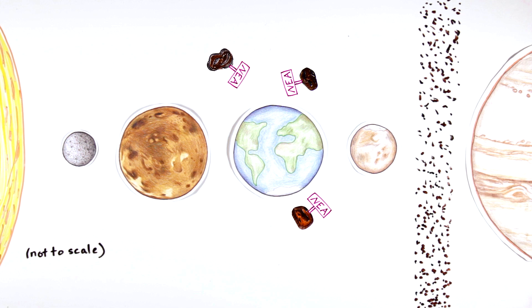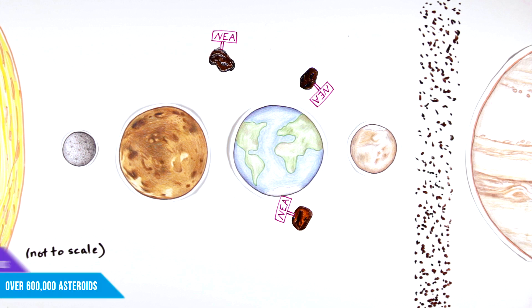These are called near-Earth asteroids, or NEAs for short. Because they're closer to Earth, they're easier to reach, so OSIRIS-REx scientists narrowed their search to this group to find the perfect target asteroid.